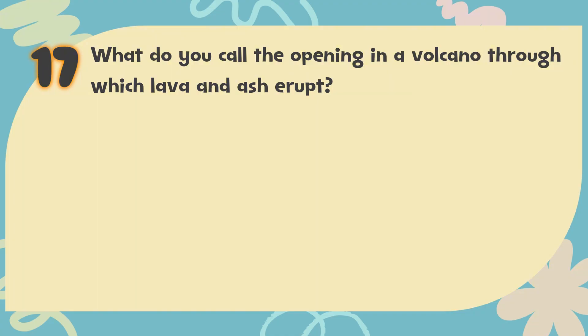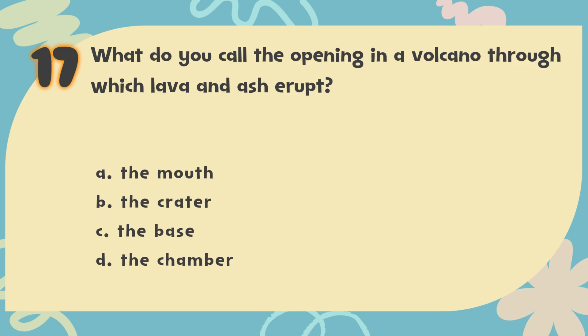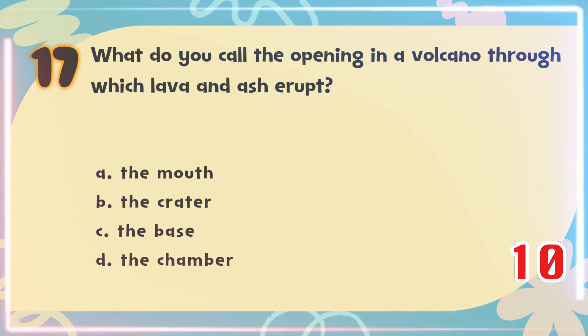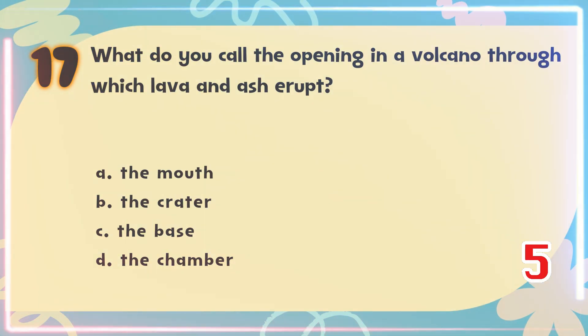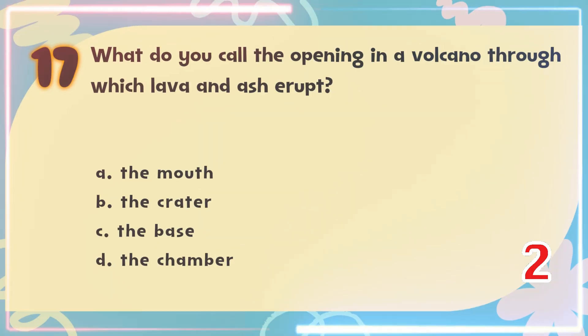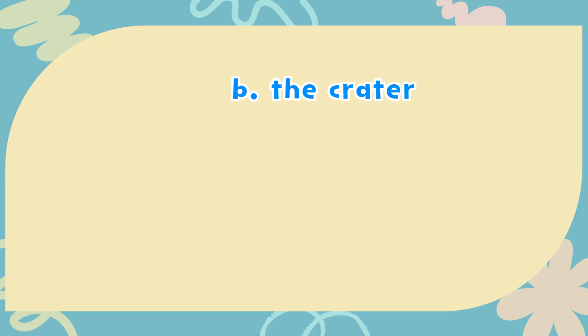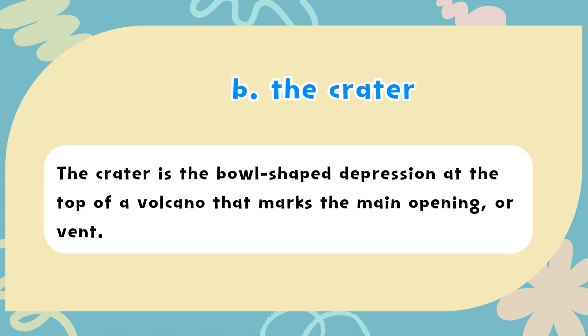Number 17. What do you call the opening in a volcano through which lava and ash erupt? The choices are: A. The mouth, B. The crater, C. The base, D. The chamber. The correct answer is B. The crater. The crater is the bowl-shaped depression at the top of a volcano that marks the main opening, or vent.